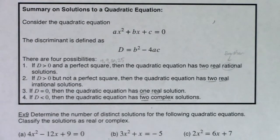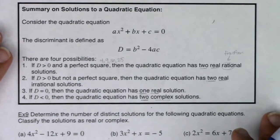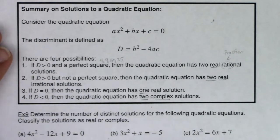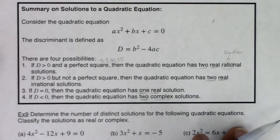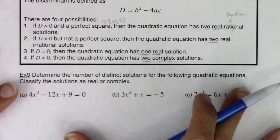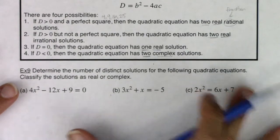With that, we're going to look back at what we did in example 8. We're going to think about those discriminants, and then qualify the number of solutions that we have. We're going to determine the number of distinct solutions for the following quadratic equations and classify them as real or complex.